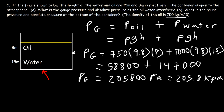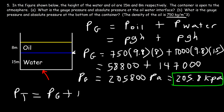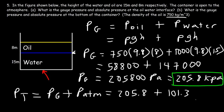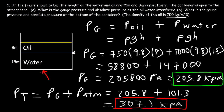The absolute pressure at the bottom is the sum of the gauge pressure and the atmospheric pressure: 205.8 plus 101.3 equals 307.1 kilopascals. That's the total pressure at the bottom of the container — due to the weight of the water, the oil, and the air above it.